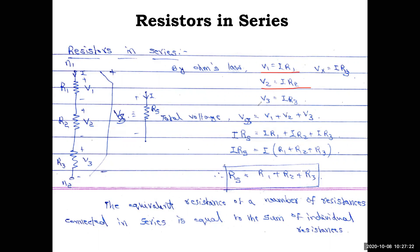Applying Ohm's law: V1 = I·R1, V2 = I·R2, V3 = I·R3. The equivalent single resistance is Rs, so Vs = I·Rs. From the series connection property: Vs = V1 + V2 + V3, giving I·Rs = I·R1 + I·R2 + I·R3. Since I is common, it cancels out, leaving Rs = R1 + R2 + R3.